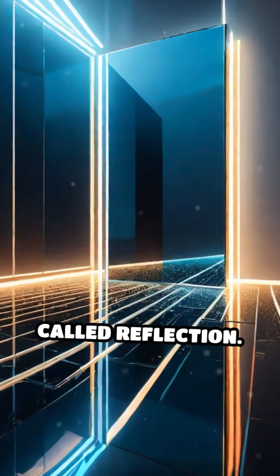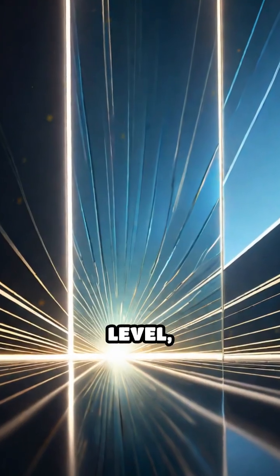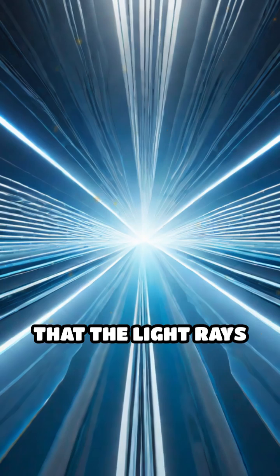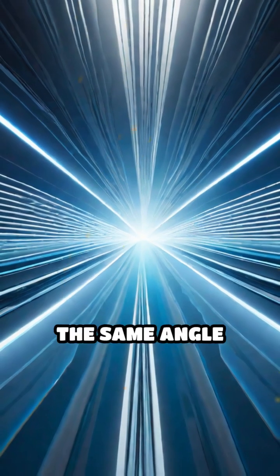This process is called reflection. On a microscopic level, the smoothness of the mirror's surface ensures that the light rays all bounce off at the same angle they arrived, following the law of reflection.